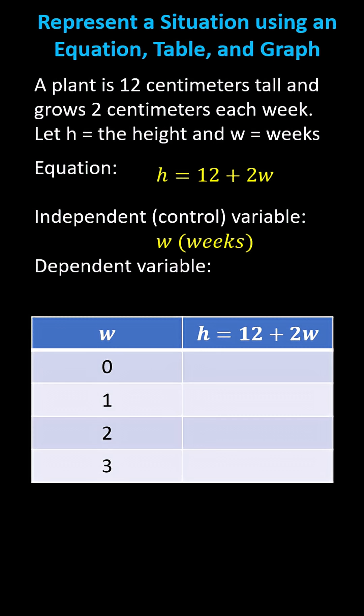The dependent variable is the variable h, which is the height, because the height depends on the number of weeks. And now let's complete the table below where we have the number of weeks in the first column and the height in the second column.